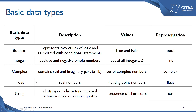Float data type consists of all real numbers which are floating point numbers, represented as float. String data type consists of all strings and characters — anything enclosed between single or double quotes is treated as a string data type. The value enclosed between the quotes can be a number, a special character, alphabets, or anything. It is represented by the letters str.